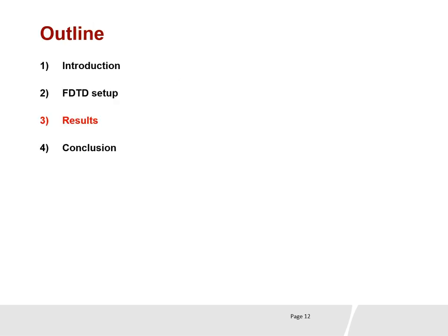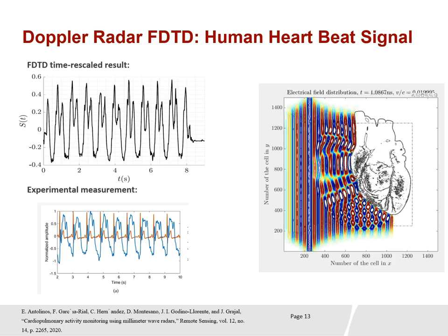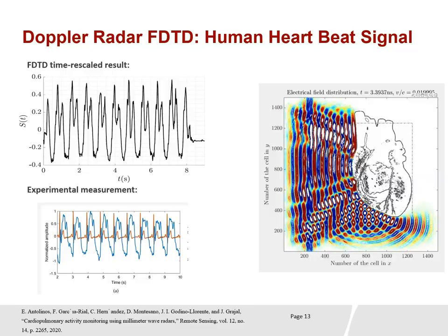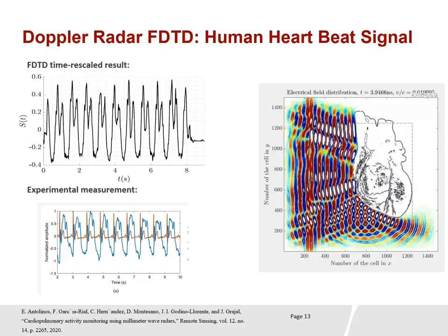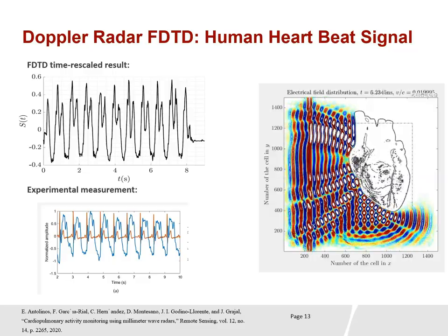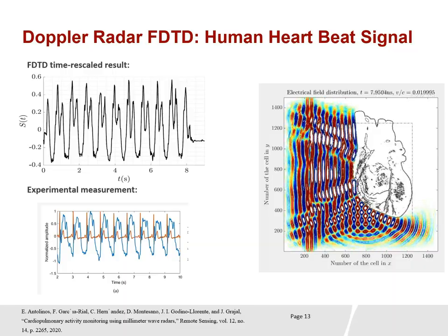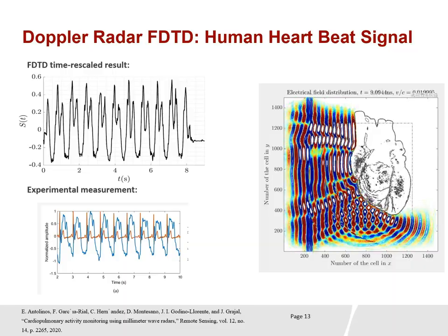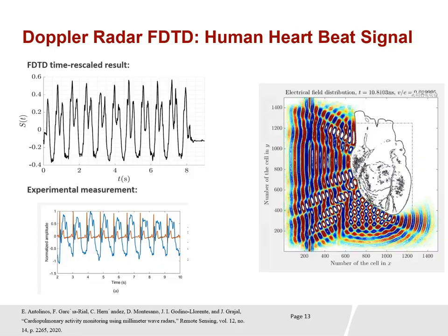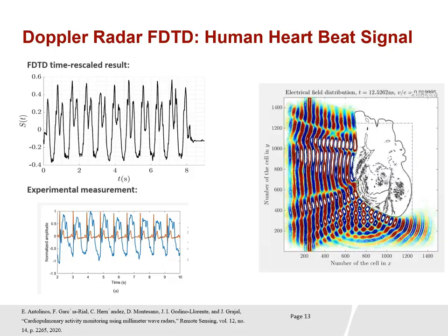Moving to the results. This is the simulation result for the human heart. The top signal is the post-processed signal from the FDTD algorithm, and the bottom is the experimental result from the referenced paper. A very good match is observed.